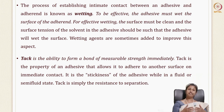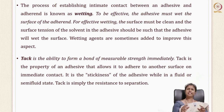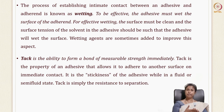For effective wetting, the surface should be clean and the surface tension of the solvent used should allow wetting. Wetting agents may also be added to bring the two materials together. Tack is the ability to form a bond of measurable strength immediately — basically the stickiness of your adhesive. The more tack an adhesive has, the better it can bond materials together. Tack is the property of the adhesive that allows it to adhere to another surface.